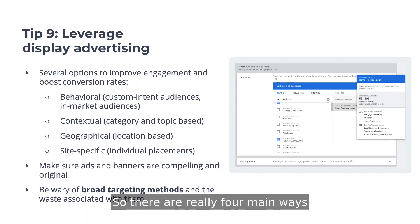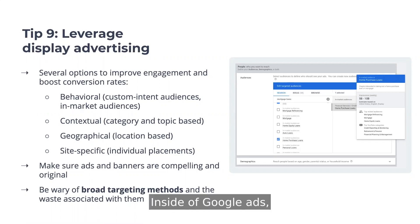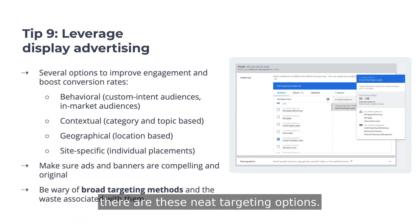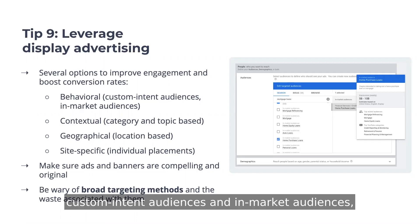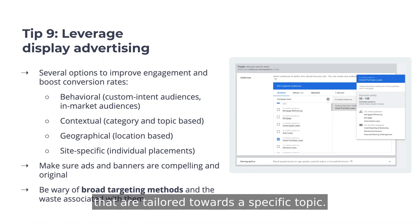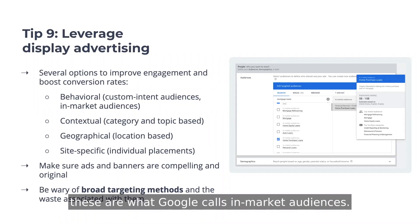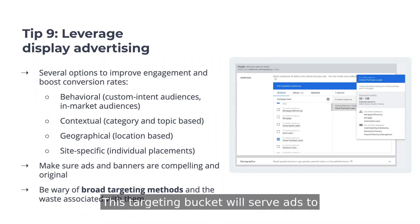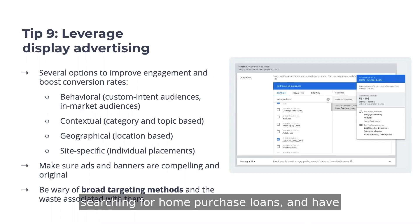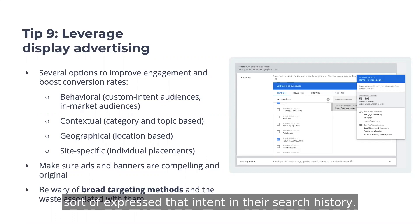There are really four main ways to do display advertising. The first is behavioral. Inside of Google Ads, there are these neat targeting options, two of which are included here: custom intent audiences and in-market audiences that are tailored towards a specific topic. In the screenshot included over to the right, these are what Google calls in-market audiences. This targeting bucket will serve ads to users and customers who have been actively searching for home purchase loans and have expressed that intent in their search history.